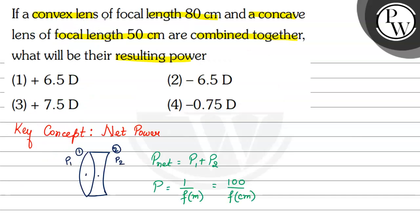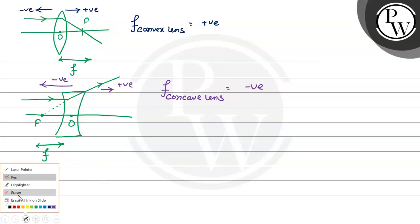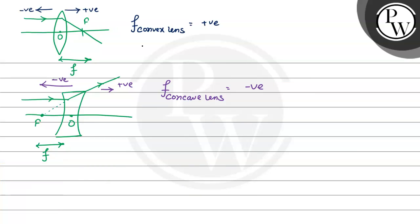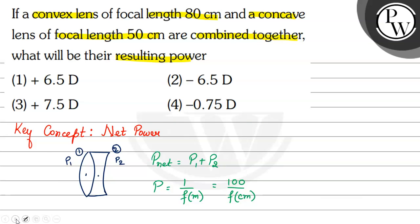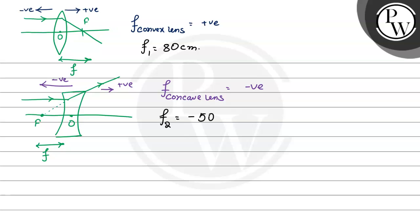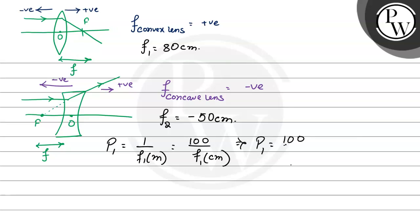So if a convex lens of focal length 80 cm is given, तो यहाँ से हम लोग बोल सकते हैं कि F1 is equal to positive 80 cm, and since it is a convex lens, focal length is taken as positive। And F2 — concave lens का focal length given है 50 cm — so F2 is equal to minus 50 cm, because concave lens का focal length negative होता है। अब P1 calculate करेंगे: P1 will be 100 by F1 in cm, so P1 is equal to 100 by 80.